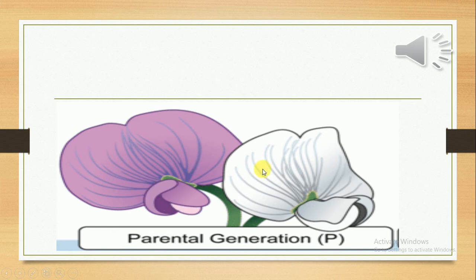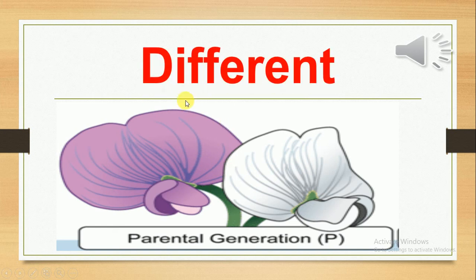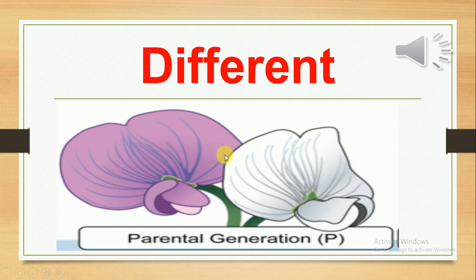Those two flowers have different colors — this white one and this purple one. So the parent flower and the young flower are different. This is all for today. Thanks for watching, guys! After this, we know that all living things can have parents.